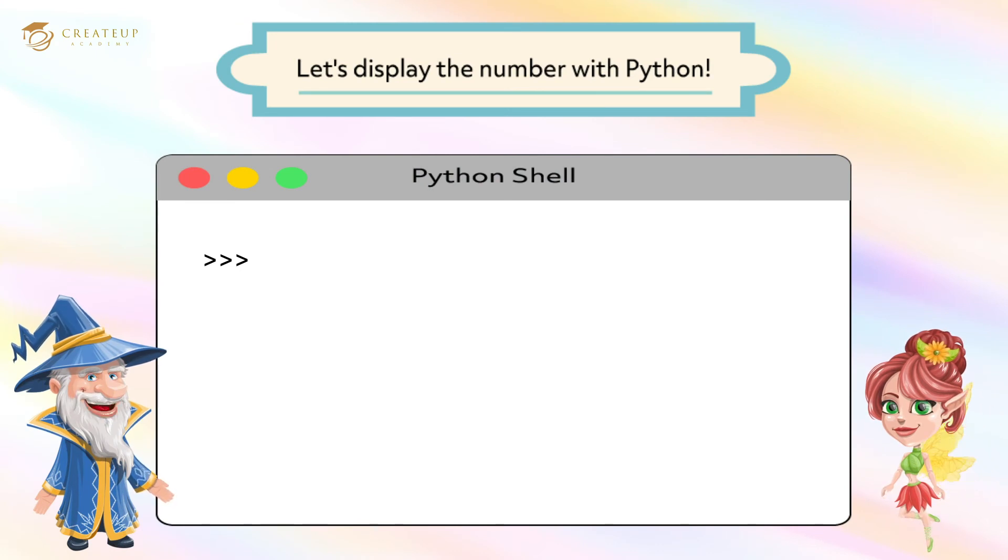To display one, type print after the prompt and type 1 in parentheses, then press the Enter key and 1 is displayed. Great! This is my first time programming. Don't forget to type the parentheses - the parentheses are necessary for the command. If you get an error, calm down and try again.